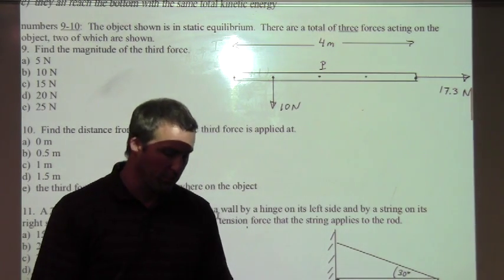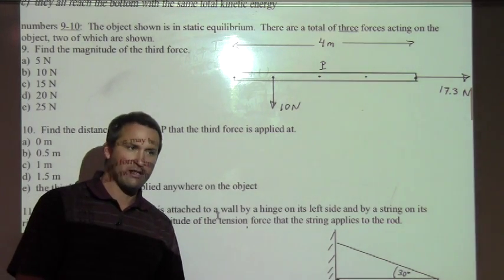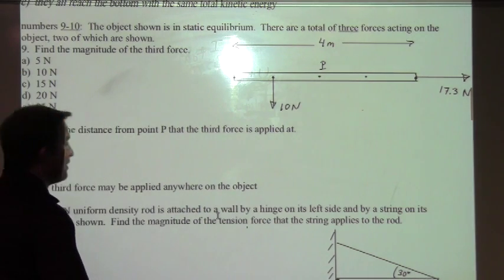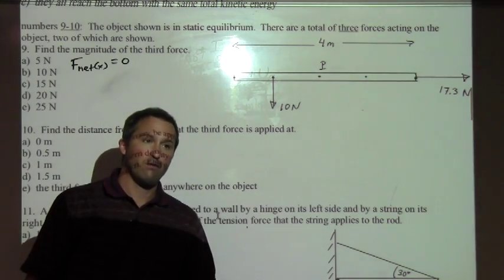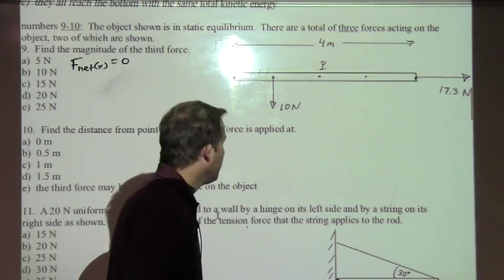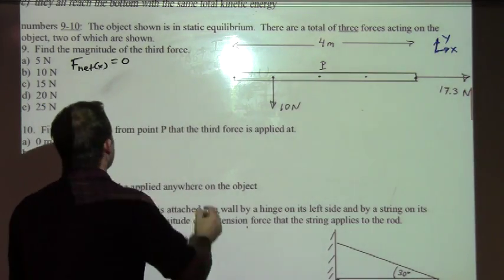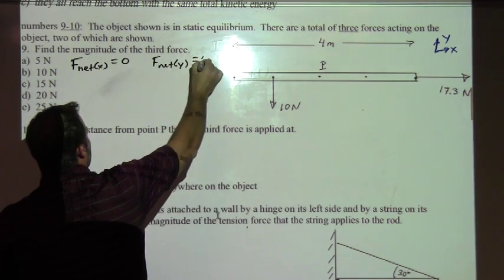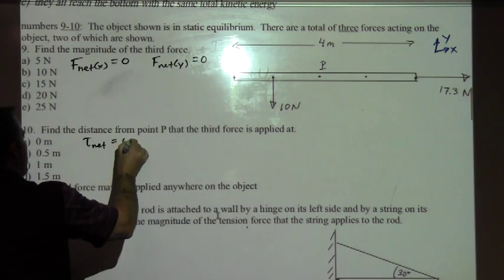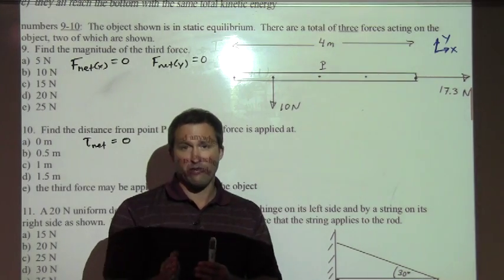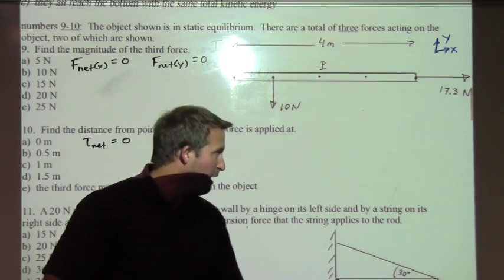The tools that we get to work with in any equilibrium problem is that the net force has to be zero and the net torque has to be zero. We apply it with these components: the horizontal net force must equal zero, the vertical forces have to add up to zero, and finally the net torque has to be zero. This is the net torque about an axis that goes in and out of the board, the z-axis, but that's the only axis we use for our torques.